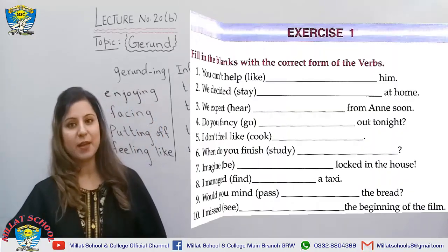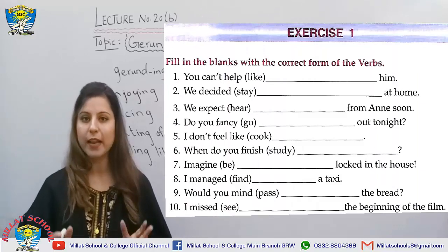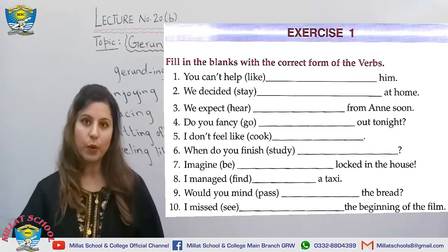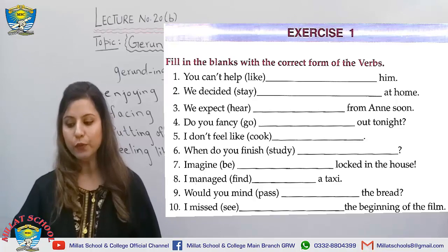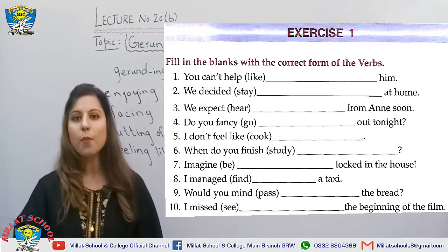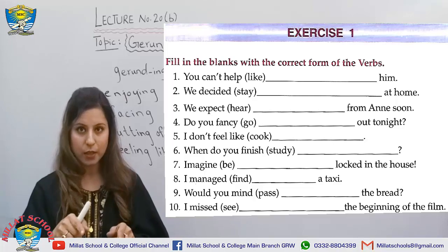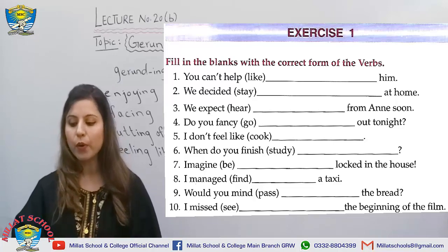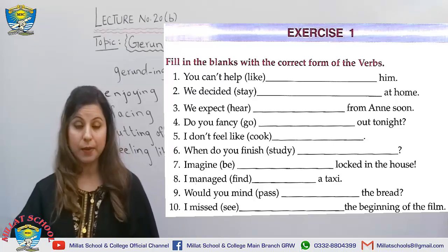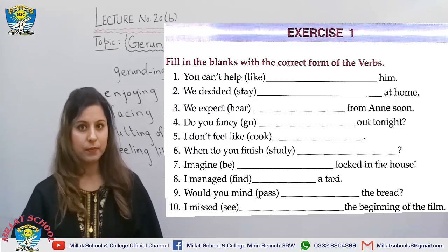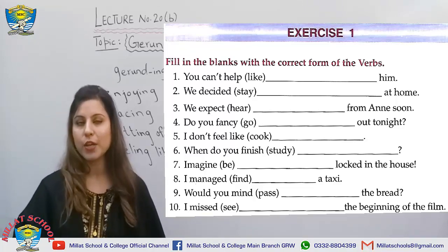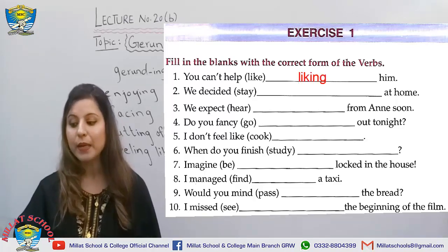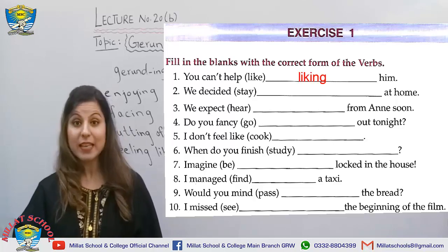Let's move to Exercise 1 on page 106 — fill in the blanks with the correct form of the verbs. The form of the verbs has been given in brackets, and you just need to choose between infinitives and gerunds. Number one: 'You can't help like him' — I will add -ing to make it 'You can't help liking him.' This is your gerund.